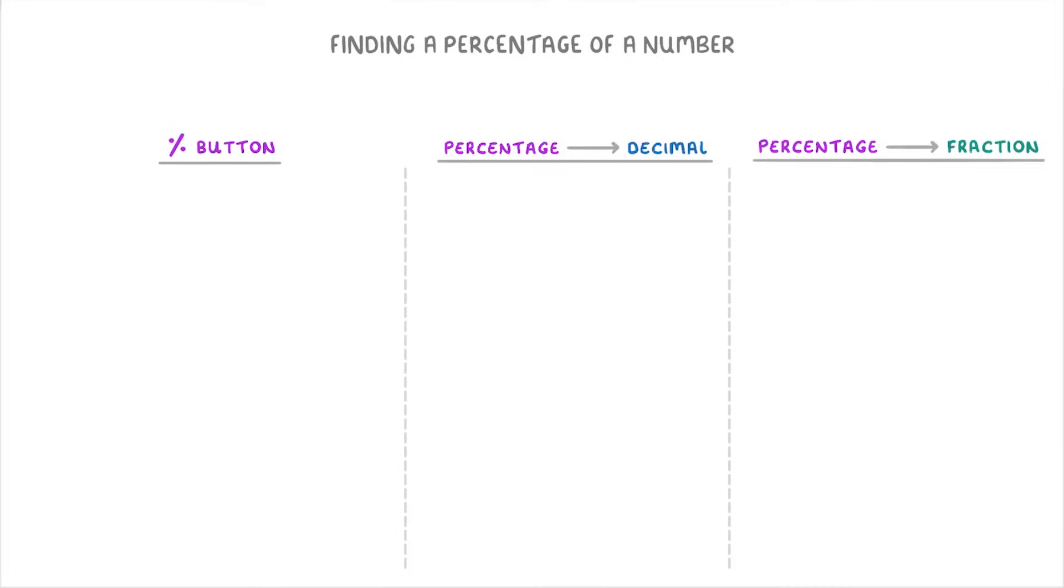Have a go at using all three techniques for this one. So here, we're being asked to find 36% of 250. The simplest thing to do would be to put 36% times 250 straight into the calculator, which will give us 90.